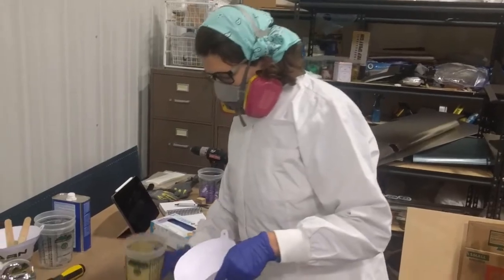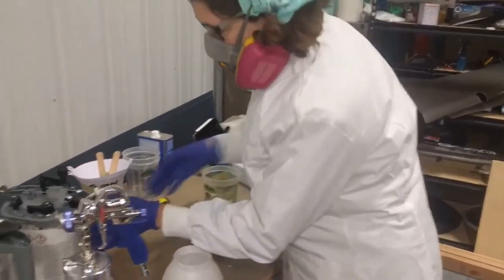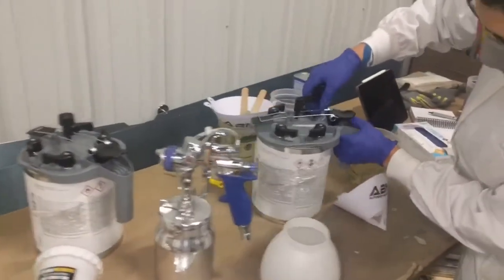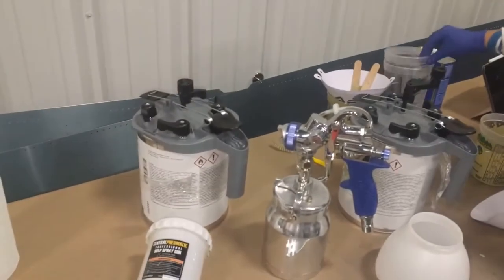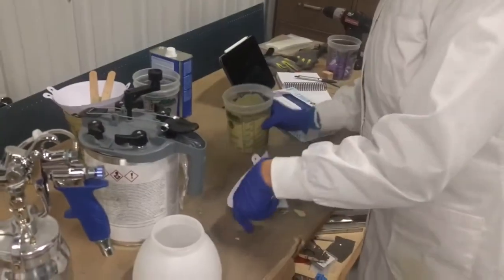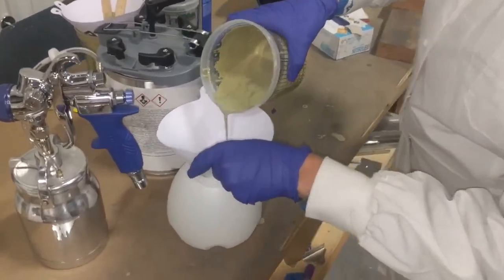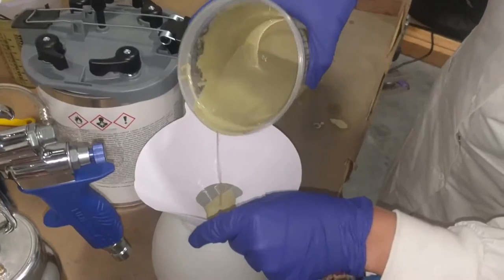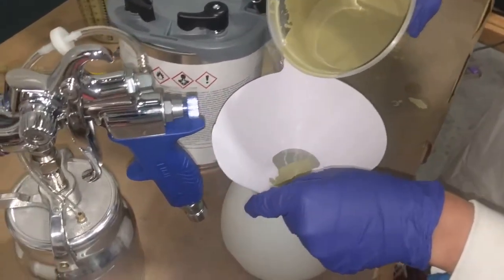Okay guys, so now we've got our epoxy mixed up. We're actually using this AXALTA two-part primer. We mix it in these nice little cake cups, one part to one part, and now we're going to put some of it into our Home Right Super Finish Max. Do you want to do all of it? No, let's do like a third of it.